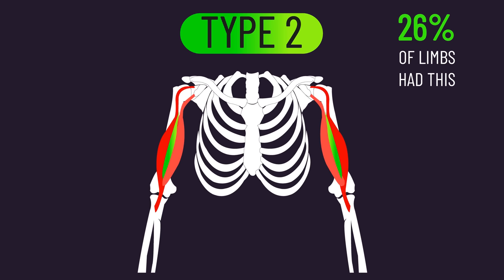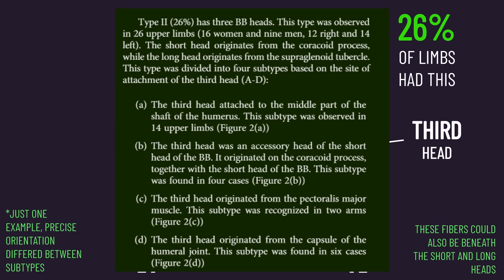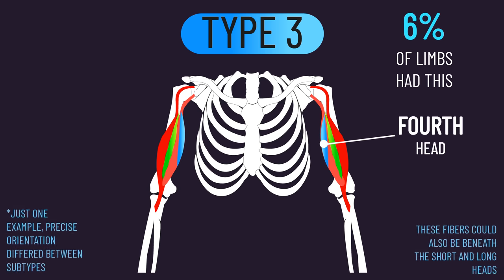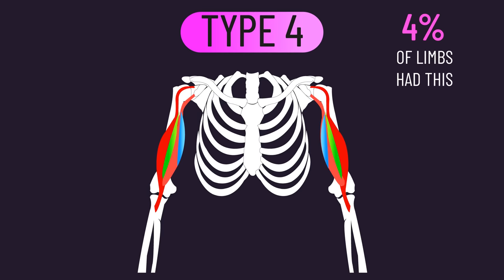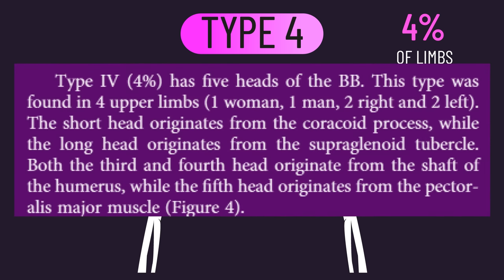26% of the upper limbs fell into type 2, categorized by having three biceps heads, with four subtypes differing in the origin of that third head. Fascinatingly, one subtype had the third head originating from the pectoralis major. 6% fell into type 3, categorized by having four biceps heads. 4% fell into type 4, categorized by having five biceps heads, and the fifth head in these cases also originated from the pectoralis major.